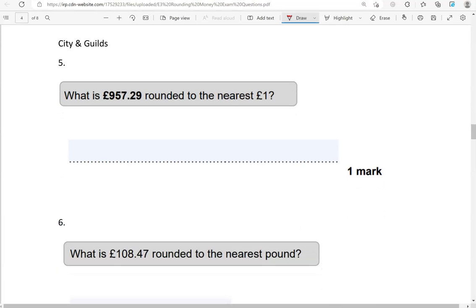What is £957.29 rounded to the nearest pound? So that's the pounds column. So this will be the cut-off point. Looking on the right, we've got 29 pence. So we're going to round down, and we're going to keep this as £957.